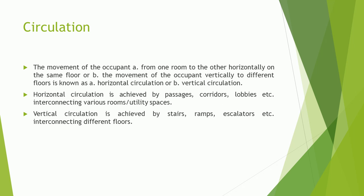Circulation refers to the movement of the occupant — A: horizontally from one room to another on the same floor, or B: vertically to different floors. Horizontal circulation is achieved by passages, corridors, lobbies etc., interconnecting various rooms and utility spaces. Vertical circulation is achieved by stairs, ramps, escalators etc., interconnecting different floors.